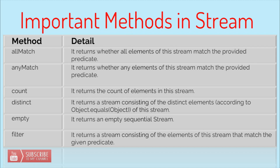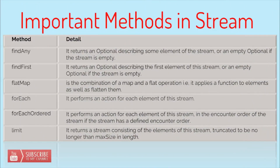The empty method returns an empty sequential stream. Filter is the most widely used method — it returns a stream consisting of elements that match the given predicate provided as an argument; elements satisfying the predicate are returned as a new stream to the next method. findAny returns an Optional describing some element of the stream, or an empty Optional if the stream is empty — it picks any element and returns it. findFirst also returns an Optional but specifically returns the first element encountered in the stream. flatMap is a combination of map and flatten — it applies a function to elements and also flattens them, useful for processing streams of streams.